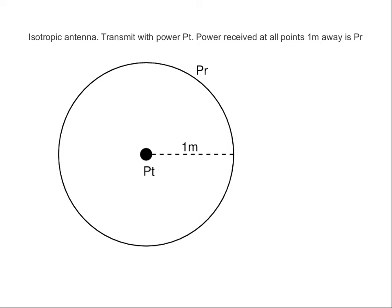Let's say I transmit a signal with some power level PT equal to 4 watts as an example. So I start with 4 watts. If I use an isotropic antenna, from all directions around that antenna, the signal disperses equally.